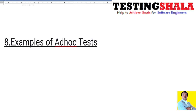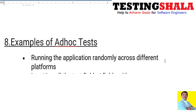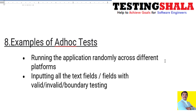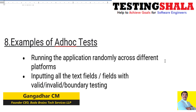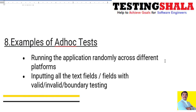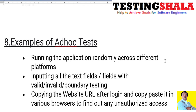The eighth interview question is: can you give examples of ad hoc testing? One example is running tests randomly across various platforms — Android, Windows, macOS, Linux, Unix — and different browser configurations to see how the application behaves. Another example is inputting all valid and invalid values, boundary conditions, or extreme conditions into text fields or form fields to see how the application behaves.